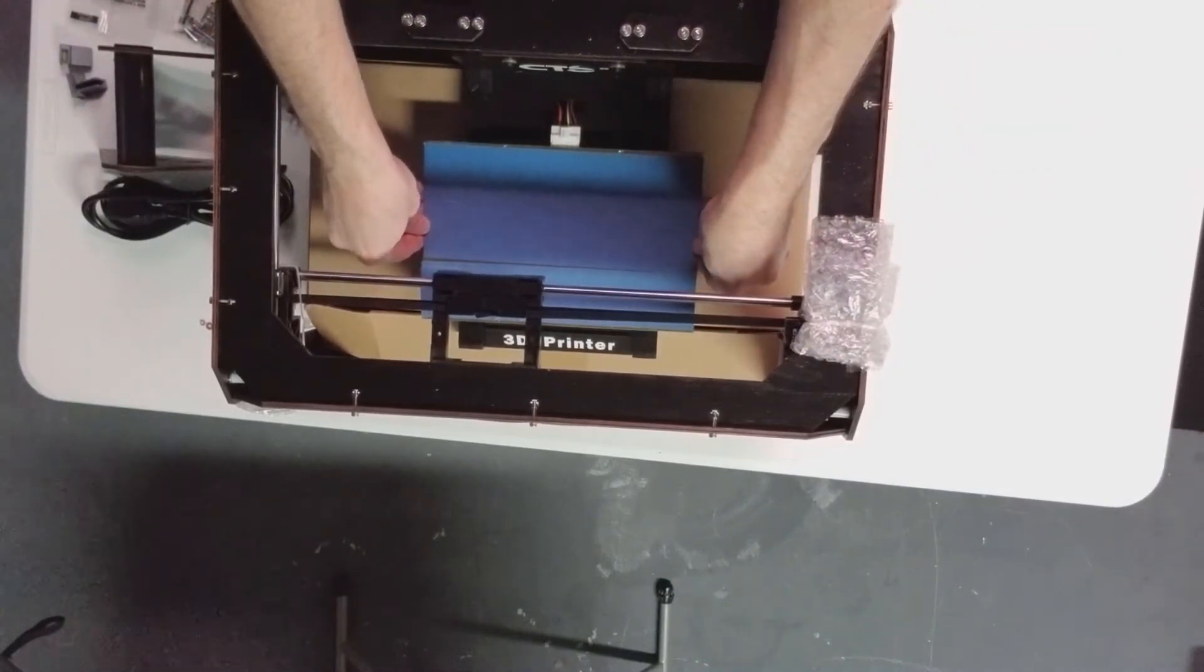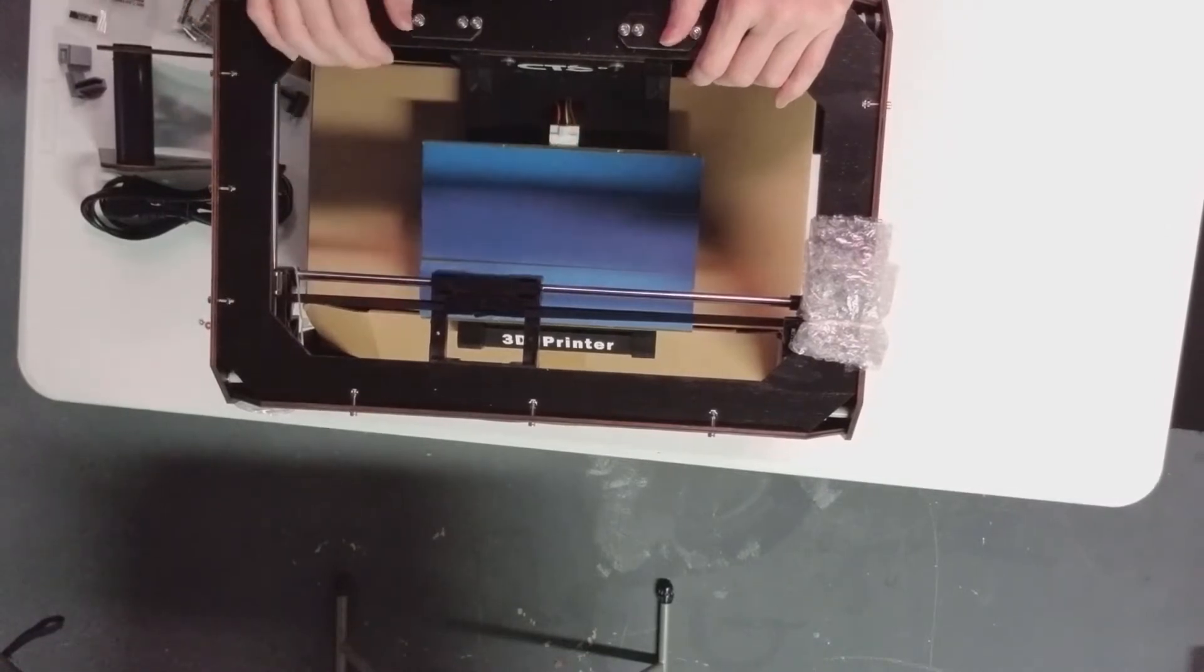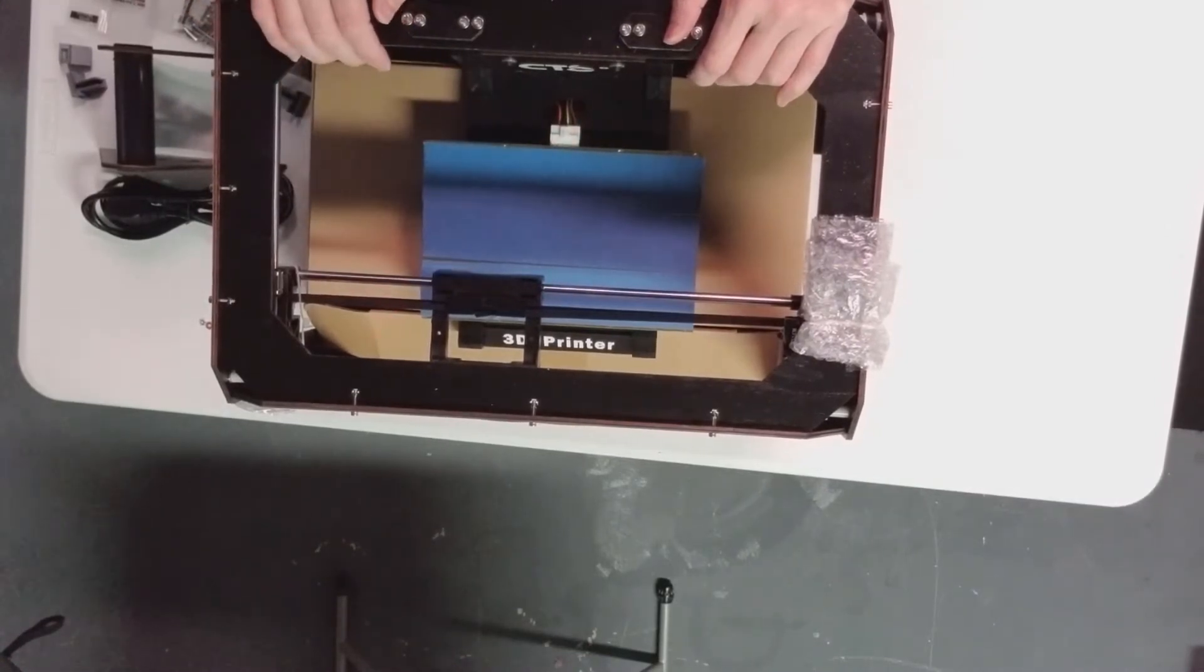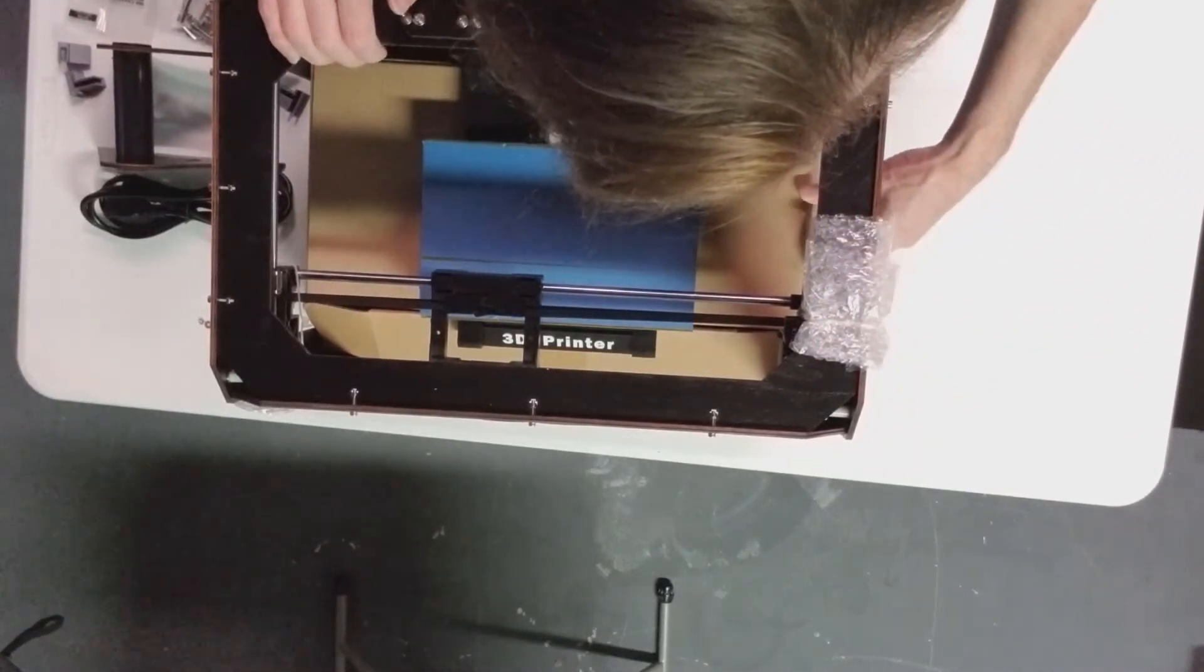As you can see, the print bed here is sitting here and it has some blue painter's tape on it. I would imagine that works well for PLA, but ABS is really not necessary. That's what you have the heat bed for. Let's keep moving down towards the bottom of the printer.